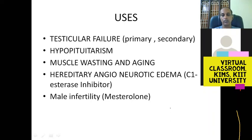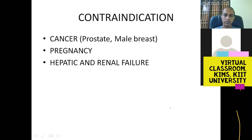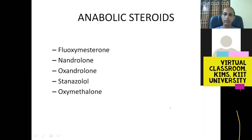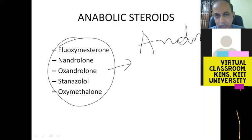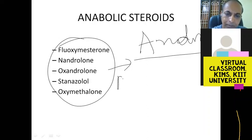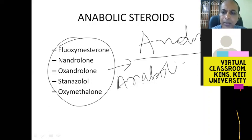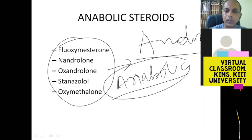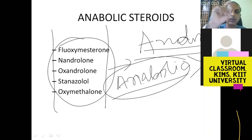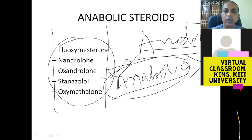Anabolic steroids are synthetic testosterone analogs — they are androgens but with more anabolic activity than androgenic activity. Synthetic forms include fluoxymesterone and methyltestosterone. They cause muscle growth and bone growth, hence termed anabolic steroids. These will be covered in detail in the next class.